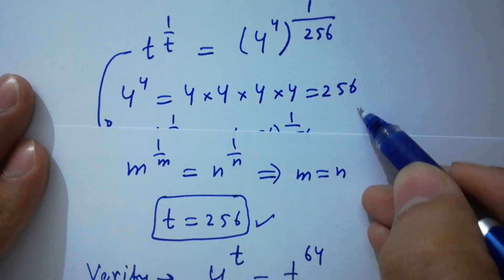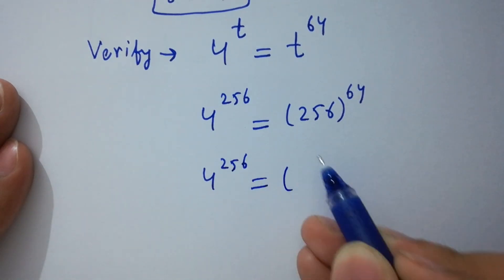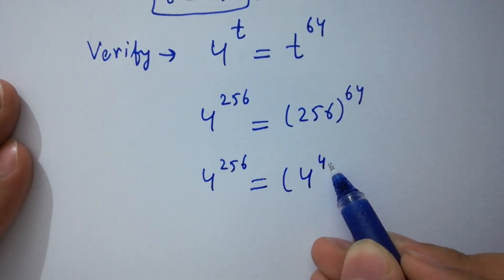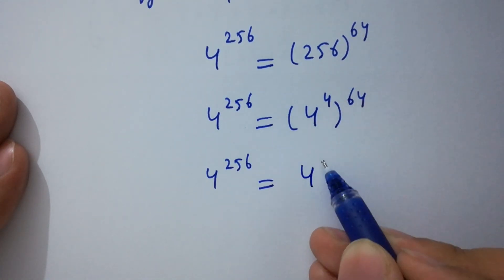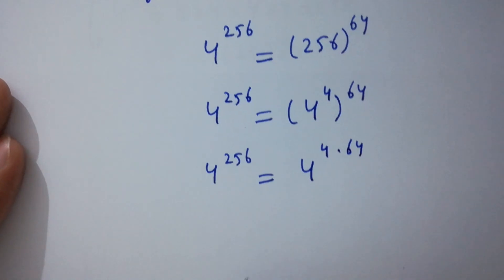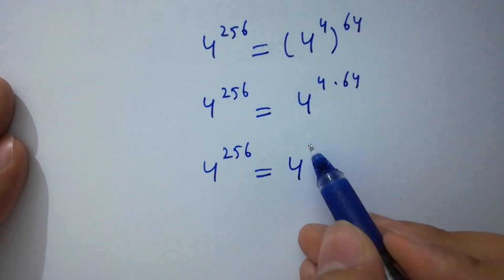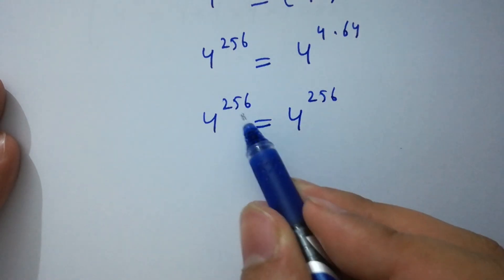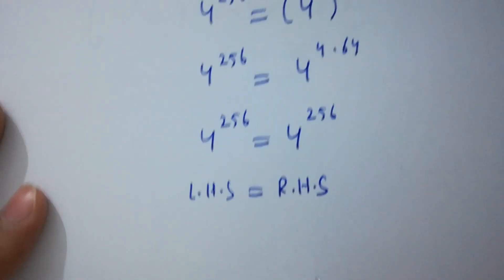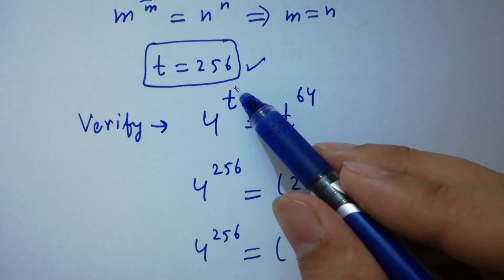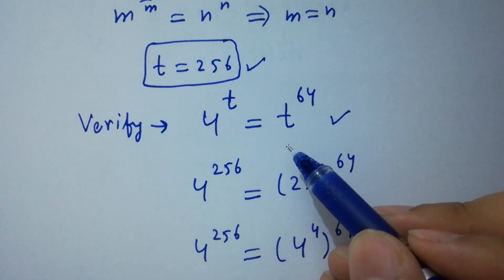Since 256 equals 4 to the power 4, we verify: 4 to the power 256 equals 256 to the power 64, which becomes 4 to the power 4 to the whole power 64, giving 4 to the power 4 times 64 equals 4 to the power 256. The base and powers are the same on both sides, so left hand side equals right hand side, which confirms that t equals 256 satisfies the equation 4 to the power t equals t to the power 64.